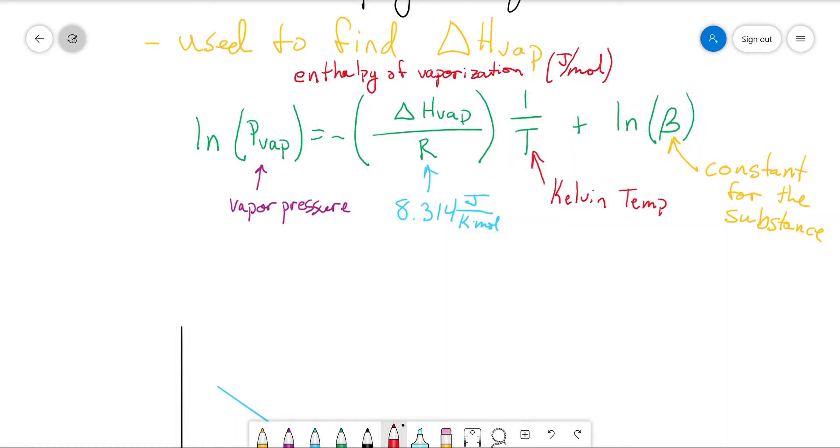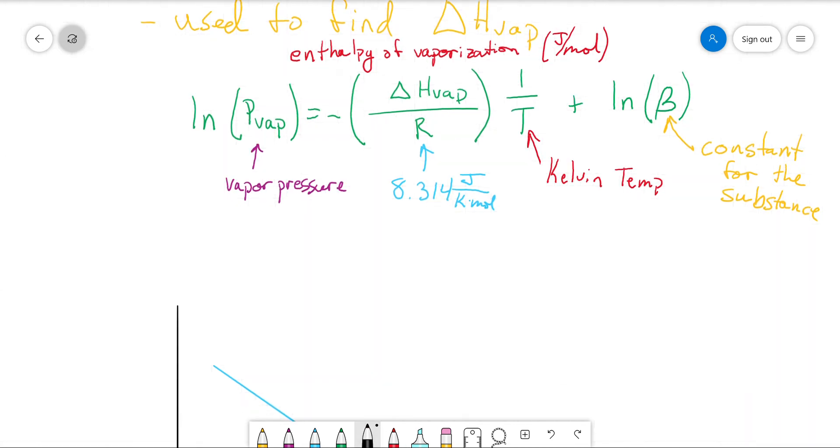And if you look, well, maybe if you don't look, this takes the form of Y is equal to M X plus B. So I know I made that kind of big, but let's go through that one thing at a time. Y is natural log of vapor pressure.